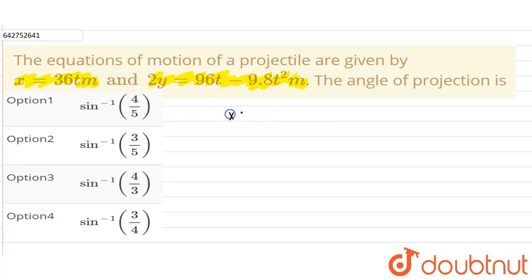So x is given as 36t meters and 2y is given as 96t minus 9.8t squared meters. We can write y as 48t minus 4.9t squared meters. Now we have to find what will be the angle of projection. Let u be the initial velocity of projection.